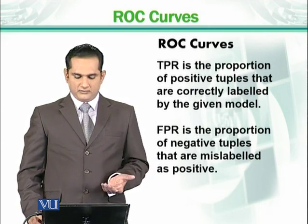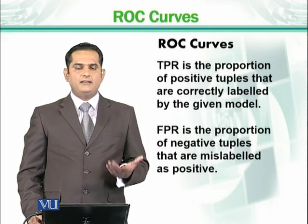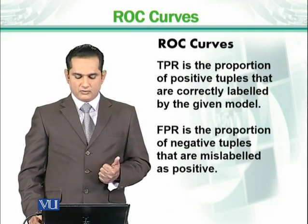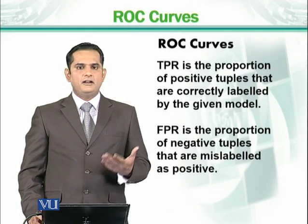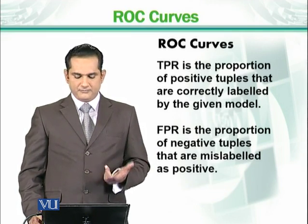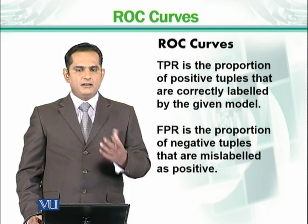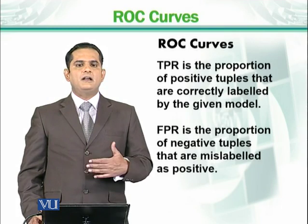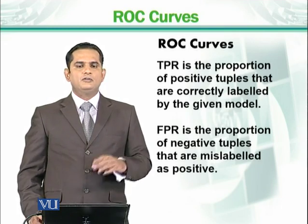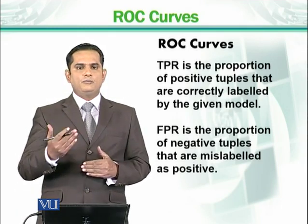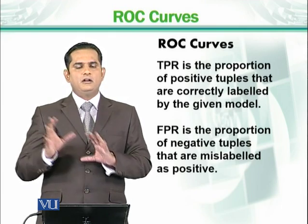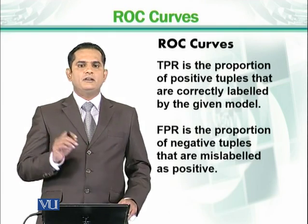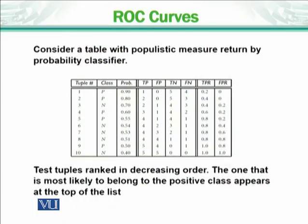True positive rate gives us tuples that are correctly labeled by our model. False positive rate is the proportion of negative tuples that are mislabeled as positive — tuples which are negative but our system labels them as yes. So these two combinations are: true positive rate (true and true) and false positive rate (false but true). Now let's look at an example.